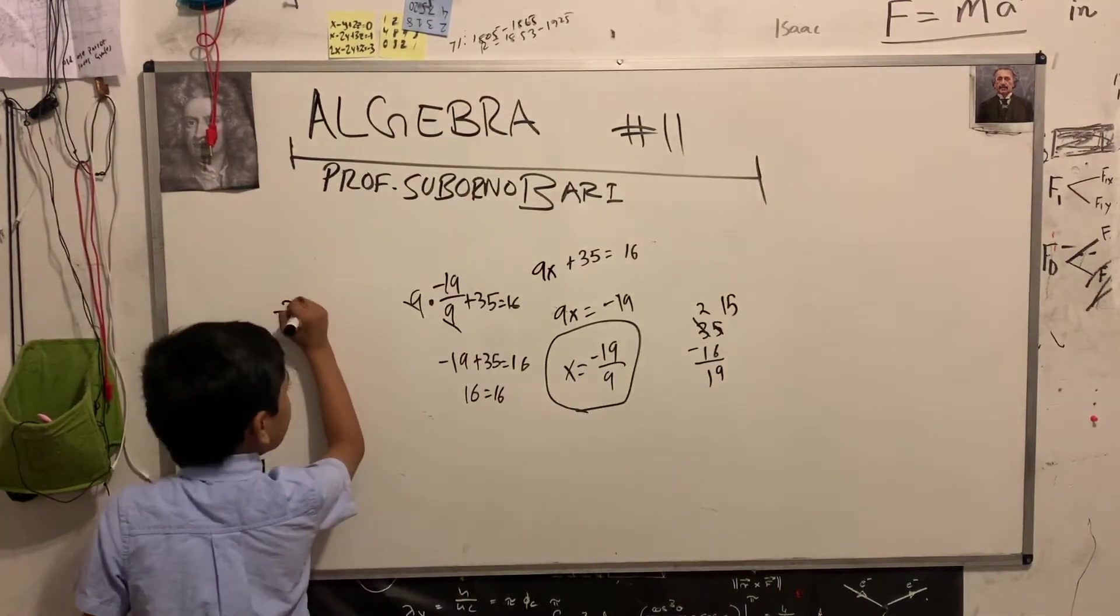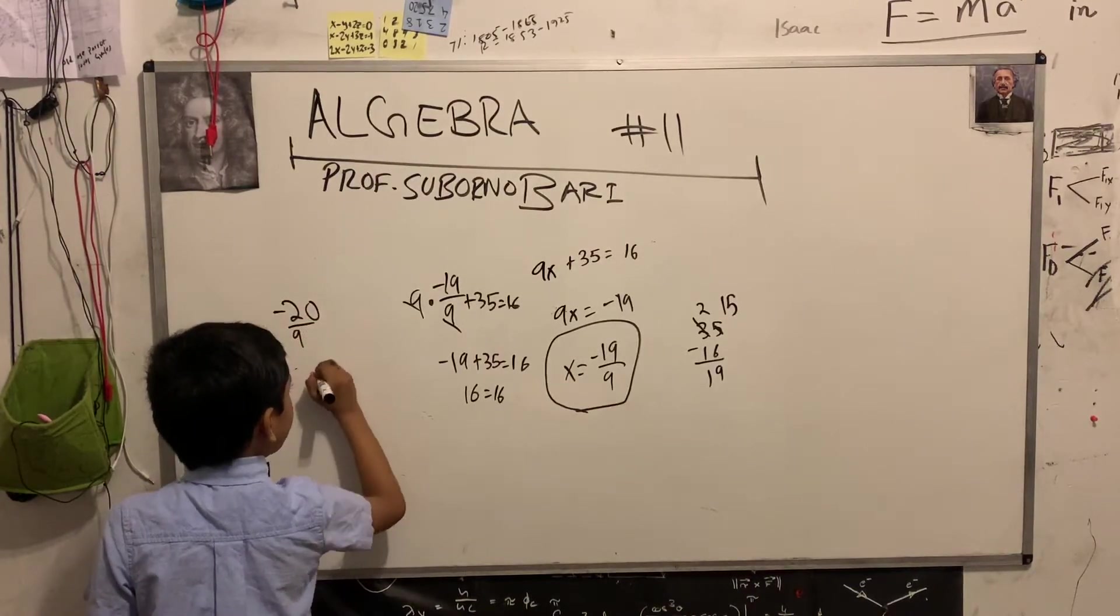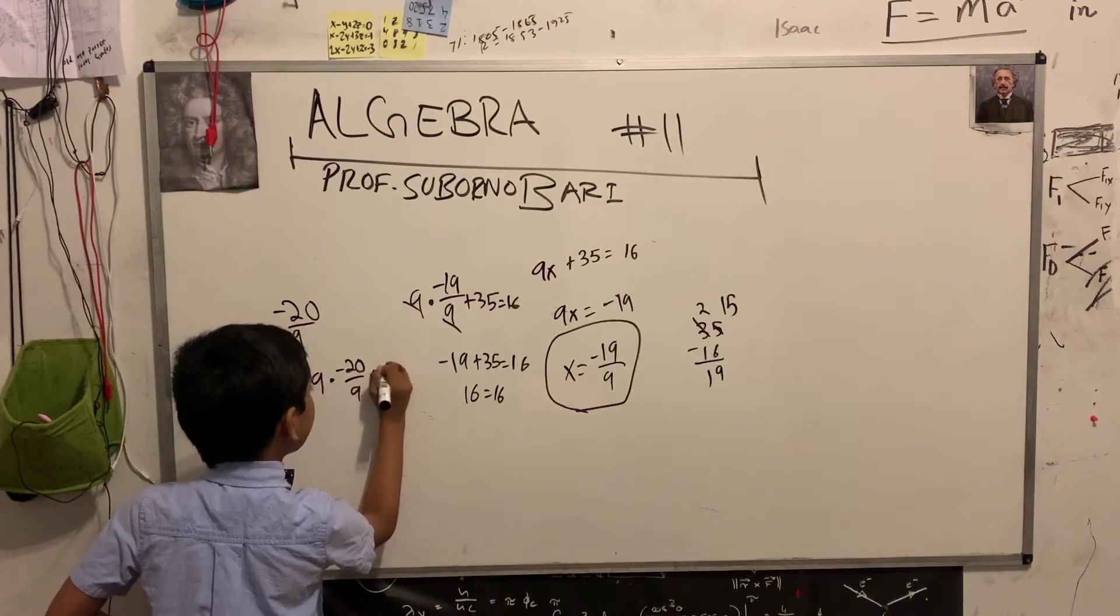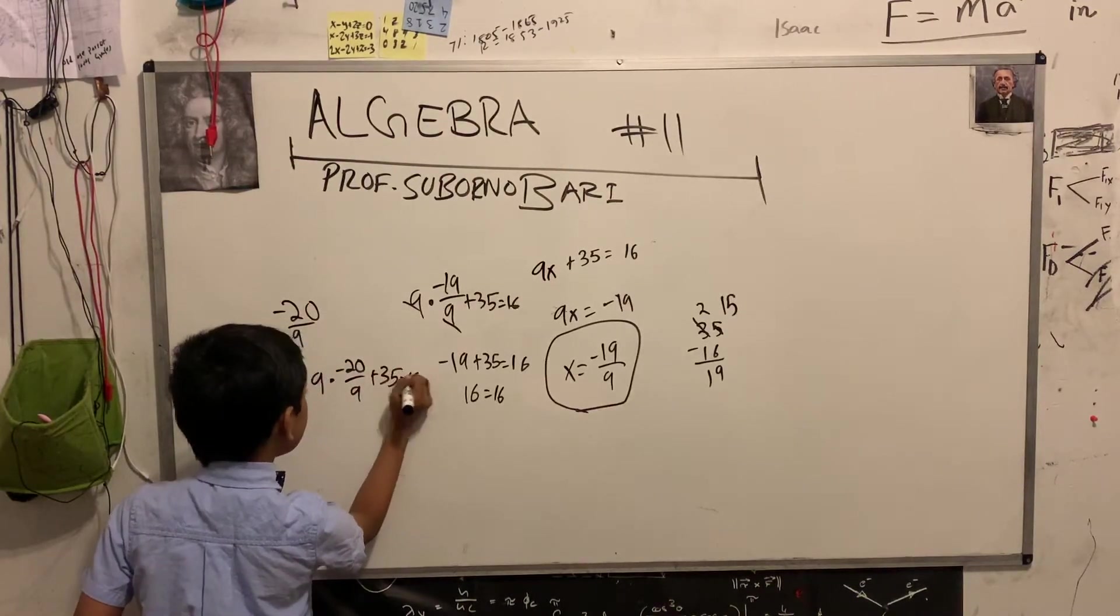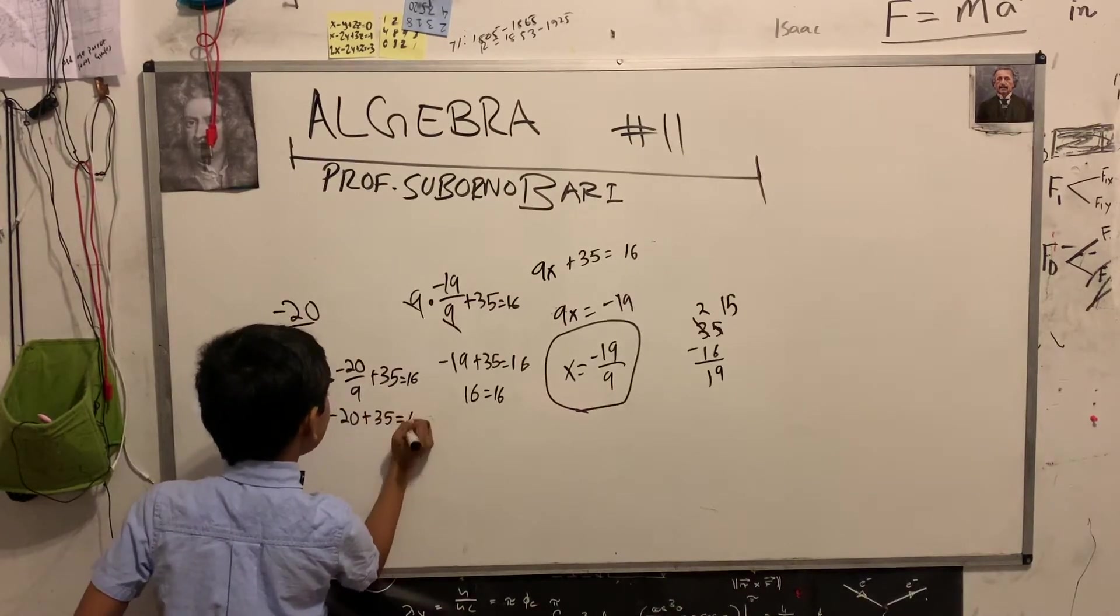Let's say we choose minus 20 over 9. Let's see what that gives us. 9 times negative 20 over 9 plus 35 equals 16. So, that gives us minus 20 plus 35 equals 16.